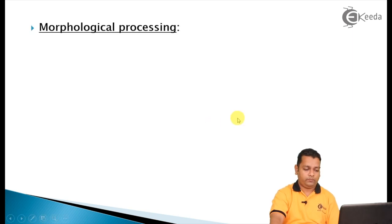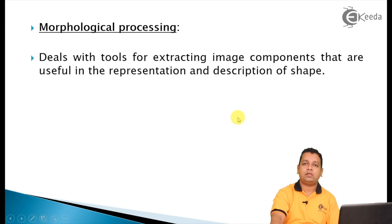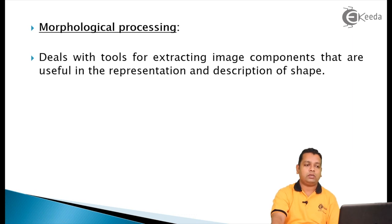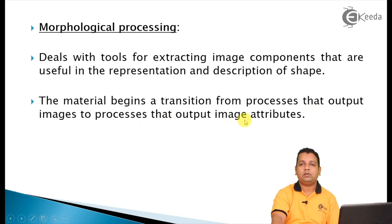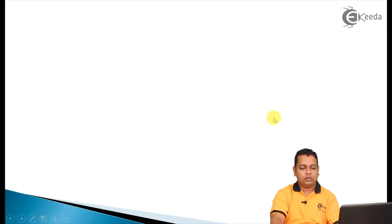The next fundamental step — morphological image processing — belongs to both categories of the classification: image-in image-out, and image-in attribute-out. It deals with tools for extracting image components useful in the representation and description of shape. Morphology deals with shape. This step marks the transition from processes that output images to processes that output image attributes.